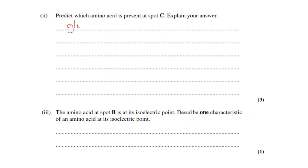Part 2 is predict which amino acid is present at spot C. It's glutamic acid because the isoelectric point is below the pH of the buffer.